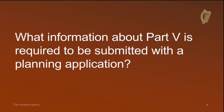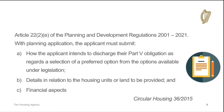What information about Part 5 is required to be submitted with a planning application? Under Article 22 of the Planning and Development Regulations, an applicant for planning must submit a Part 5 proposal with their application. Circular Housing 36/2015 summarises the requirements for this proposal. The applicant must state their preferred option to satisfy Part 5 — for example, the transfer of land or housing — submit details of the housing units or land to be provided, and provide details of the financial aspects of their proposal, including the estimated costs of any housing.